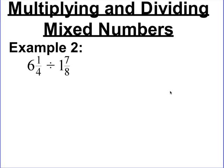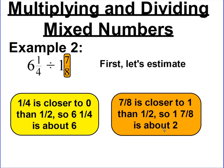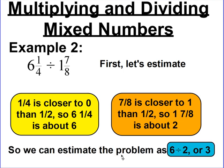Now let's try a dividing problem. We're going to estimate first and see what the answer should be close to, and then do our work to see if our estimate and answer match up. 6 and 1 fourth we estimate to 6, because 1 fourth is closer to 0 than to one half. 1 and 7 eighths we estimate to 2, because 7 eighths is really close to 1 — so with 1 as the whole number and almost 1 as the fraction, the estimate is about 2. So 6 divided by 2 gives us an estimated quotient of 3.